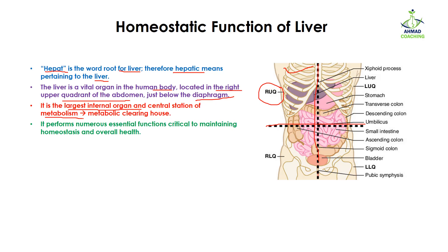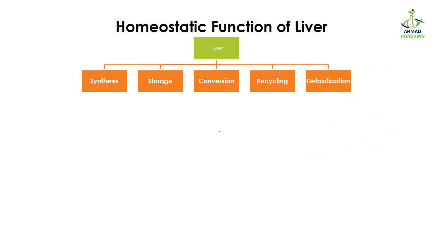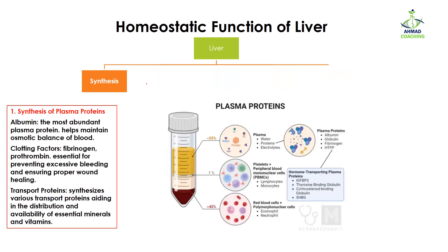The liver is the largest internal organ and the central station of metabolism. The maximum amount of chemical reactions or metabolism takes place in the liver, which is why it is also called the metabolic clearing house. Any by-product formed during metabolism is processed in the liver and removed from the body. The main homeostatic functions of the liver include synthesis, storage, conversion, recycling, and detoxification.